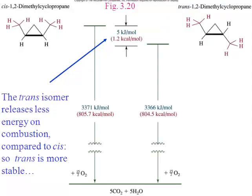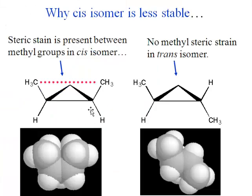We can compare these two in terms of stability, and the trans isomer is more stable. This is a potential energy diagram, kind of like what we were looking at for comparing different ring sizes. Both are comparing dimethylcyclopropane — the one on the left is cis, the one on the right is trans. Because the trans releases less energy when it's combusted, that means it is more stable in the first place. It's more stable because of steric strain. In the cis isomer, the methyl groups are actually feeling each other's presence, and the space-filling model shows just how close those methyl groups really are — they are going to bump into one another if they're on the same side of that ring. When they're in a trans arrangement, they are further apart and can't possibly bump into one another, which is why the trans isomer is more stable than the cis one.